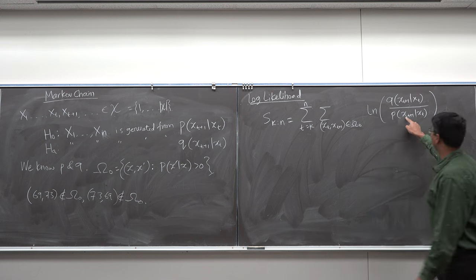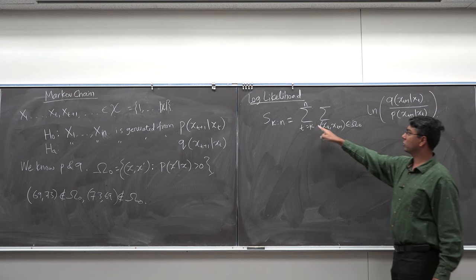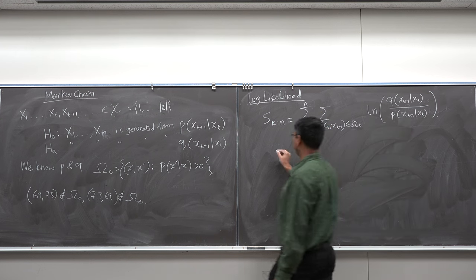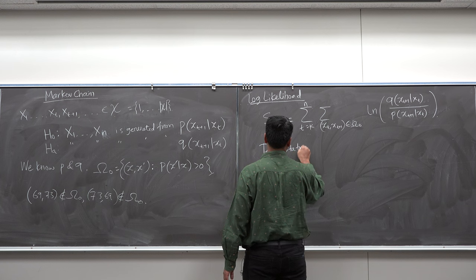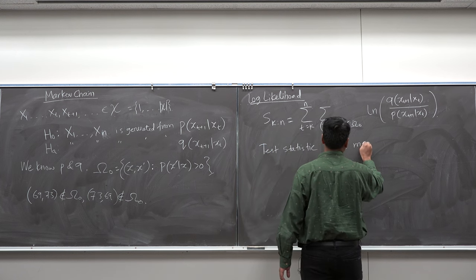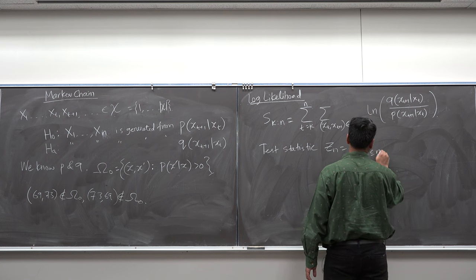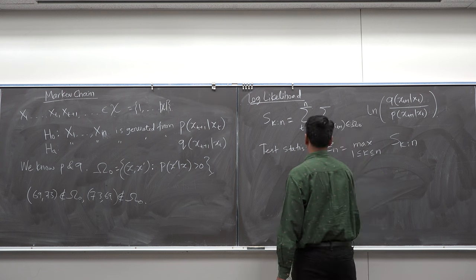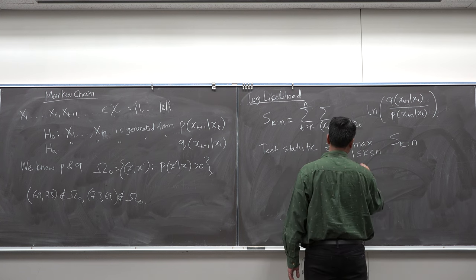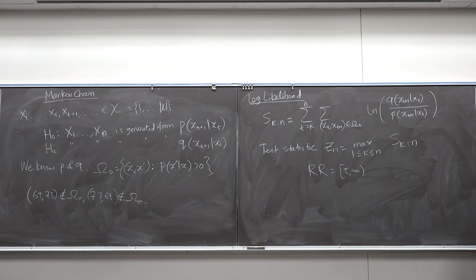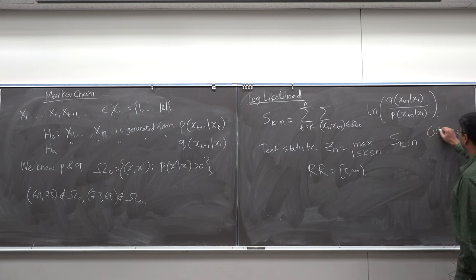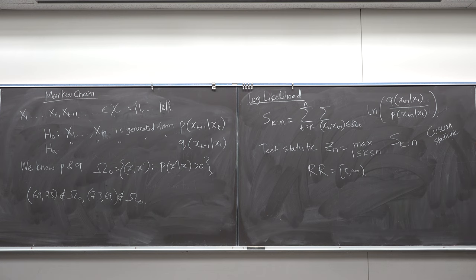The test statistic is max_{1 ≤ k ≤ N} S(k,N), and the rejection region is [τ, ∞). This is called the CUSUM or Q-sum statistic — we have seen many examples of this. This is one of many algorithms constructed using the Q-sum statistic.